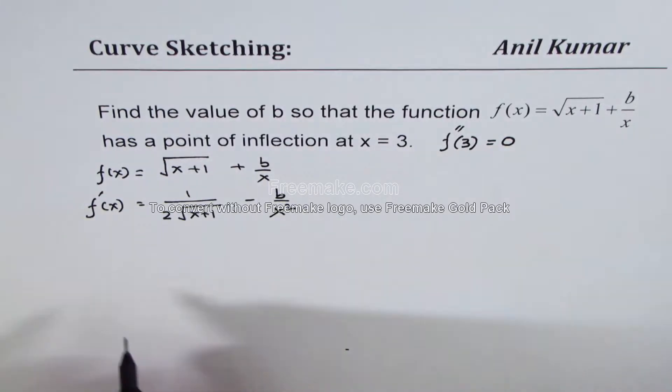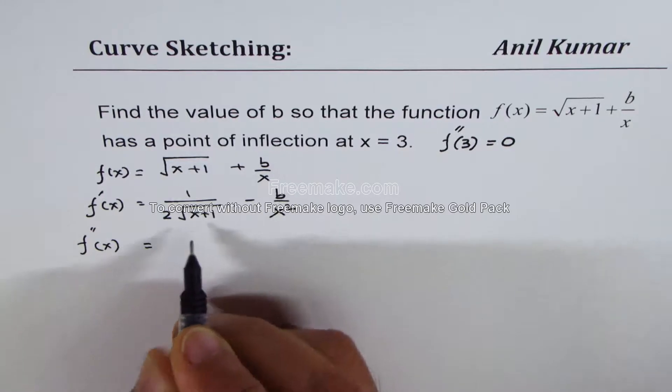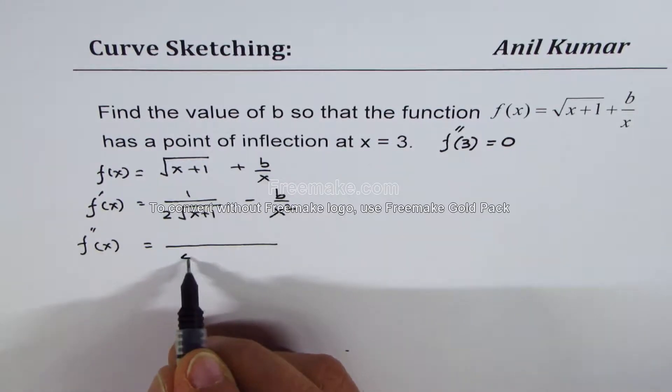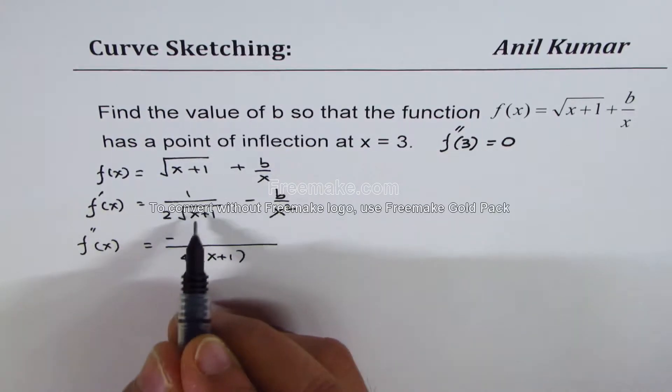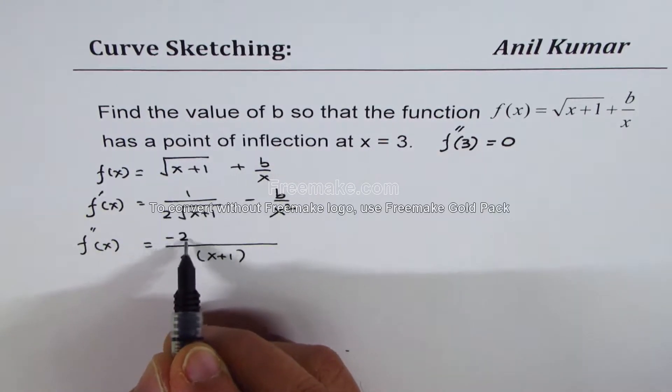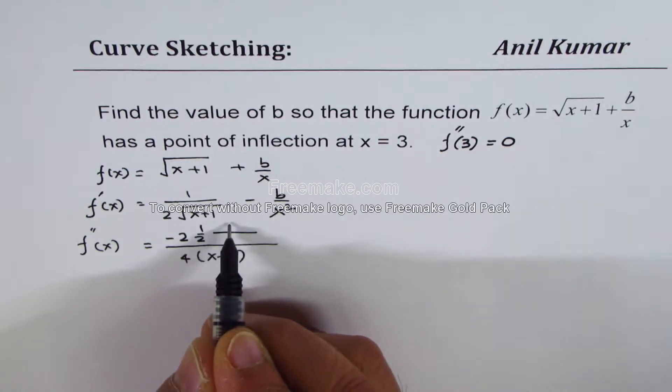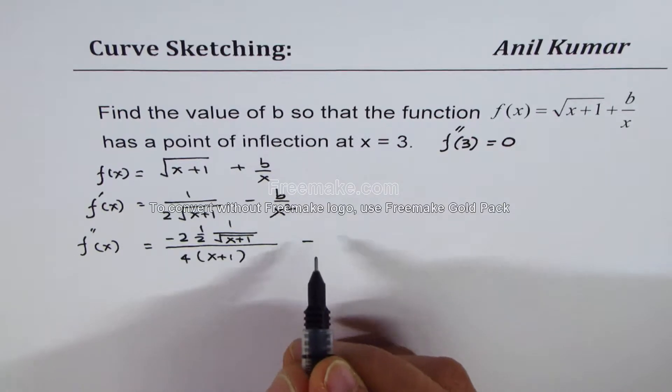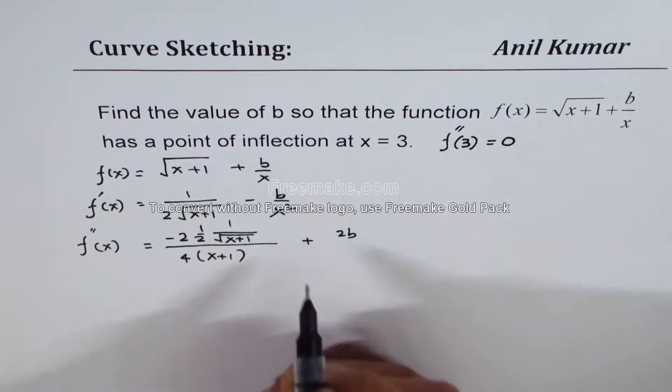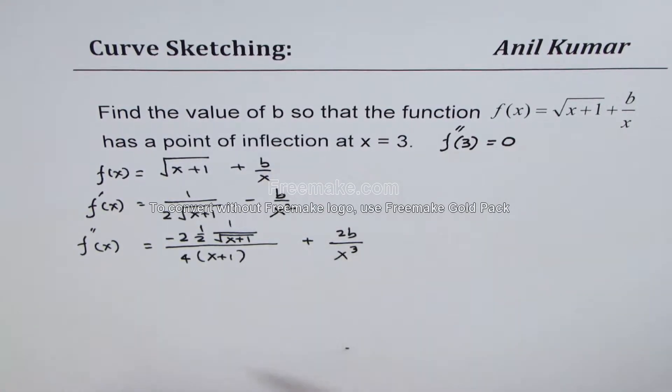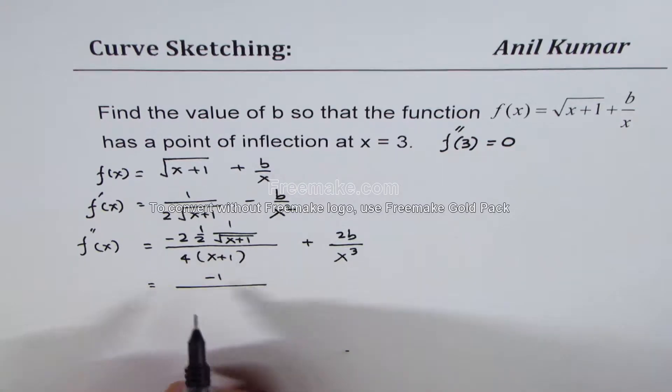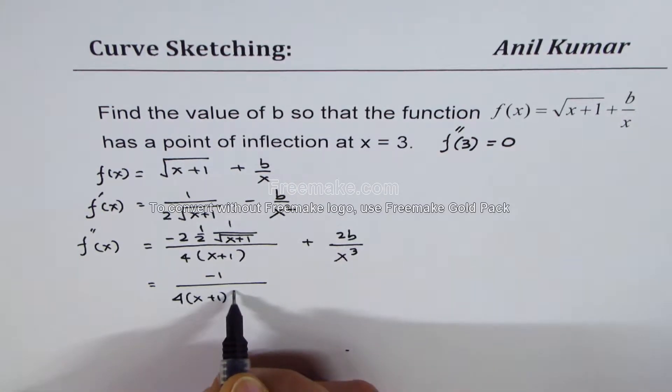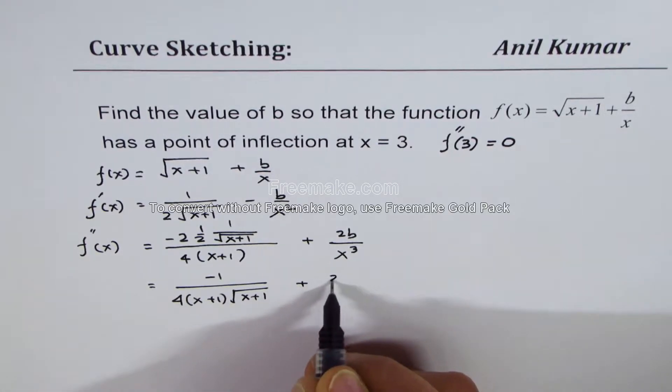The second derivative—we'll apply the quotient rule. Square of this, which is 4 times x plus 1, and 0 for 1, then minus derivative of this function, which is 2 times half and then 1 over square root of x plus 1. So we get minus 1 over 4 times x plus 1 times square root of x plus 1, plus 2b over x cubed.